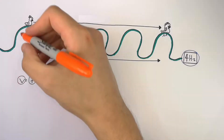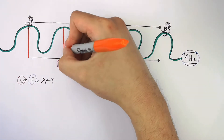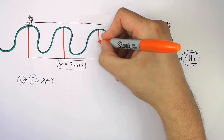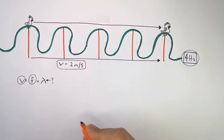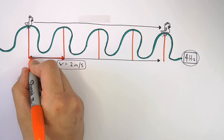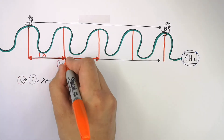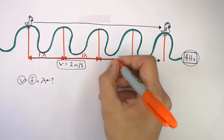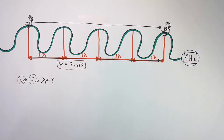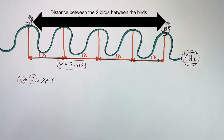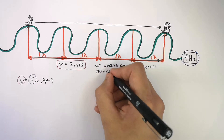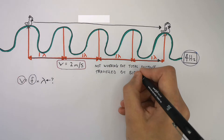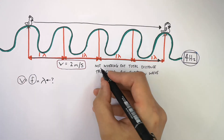As you can see, we've got four wavelengths: one, two, three, and four. We are working out the distance the two ducks are apart. We are not working out how far ducks are traveling on waves, because they do not travel on waves.